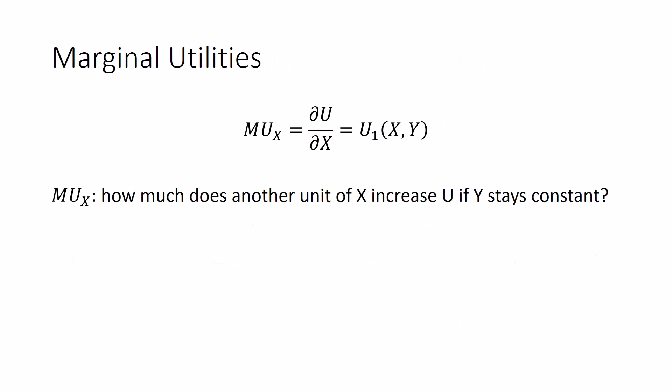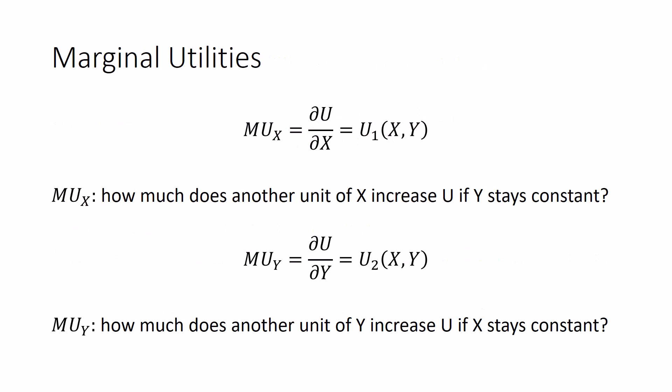So a note on marginal utilities. Marginal utility of x, or du/dx, can also be called u sub 1 of x and y. And it's how much does another unit of x increase u if y stays constant? The marginal utility of y, or du/dy, or u sub 2 of xy, is how much does another unit of y increase u if x stays constant? A note about these ones and twos over here. The u sub 1, this 1 down here, is referencing the fact that we're taking the derivative with respect to the first argument, x. The u sub 2 means we're taking the derivative with respect to the second argument, or y. That's what that means.